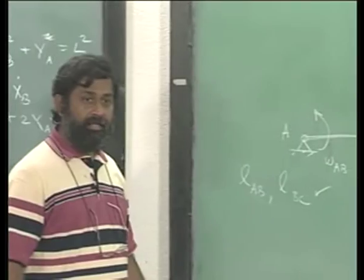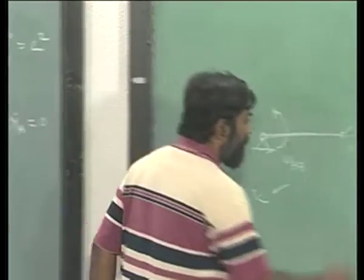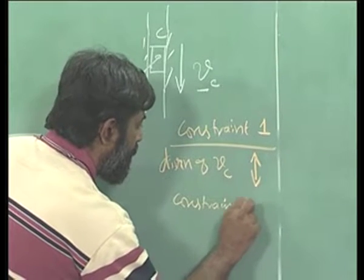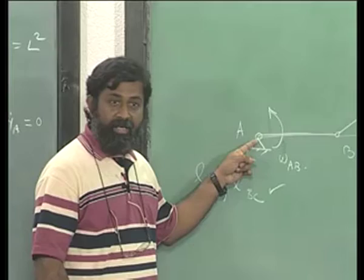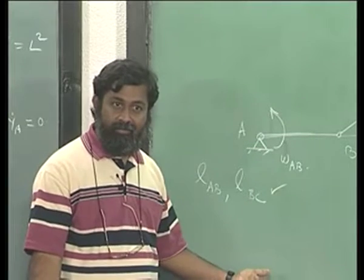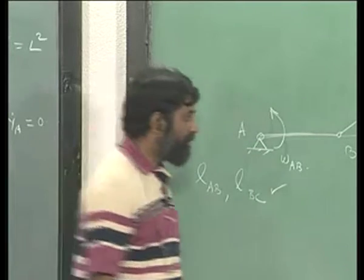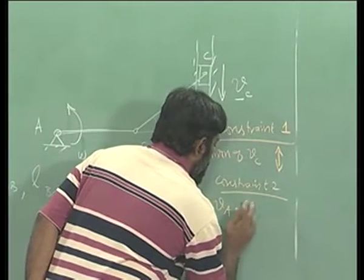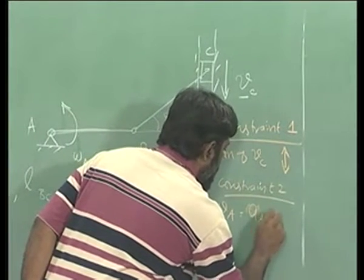What is the other constraint? Constraint number two is, if you look at this point A, it is fixed to the fixed frame. So VA equals acceleration of A equals zero. That's another constraint given.